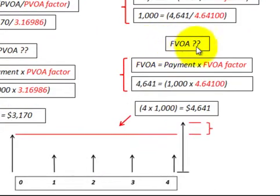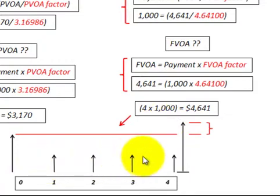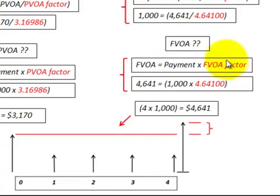Now let's look at the future value of an ordinary annuity. Again, we need to know our payment, put that in, and take it times the future value of an ordinary annuity factor. That gives us the future value of the ordinary annuity — what those four payments would be worth at the end of the four years.